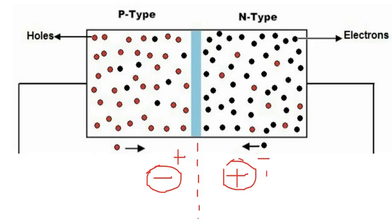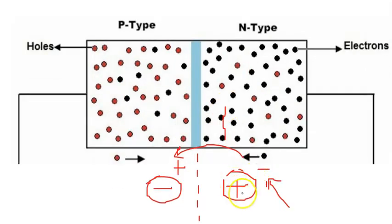We have seen that when an electron from the N side moves towards the P side and recombines with a hole, it results in a fixed positive ion in the N region and a fixed negative ion in the P region.